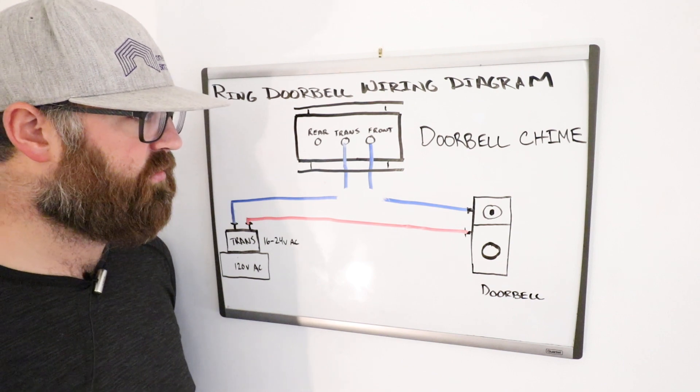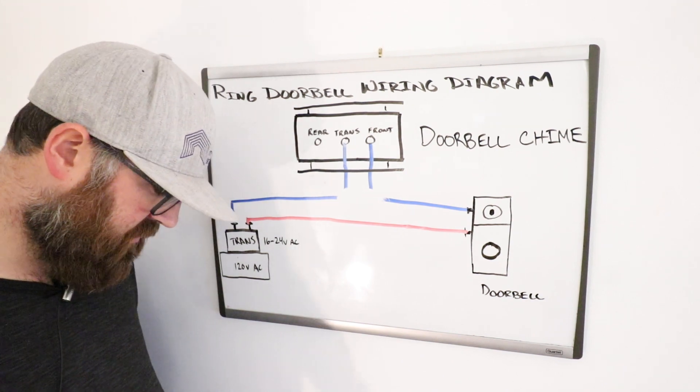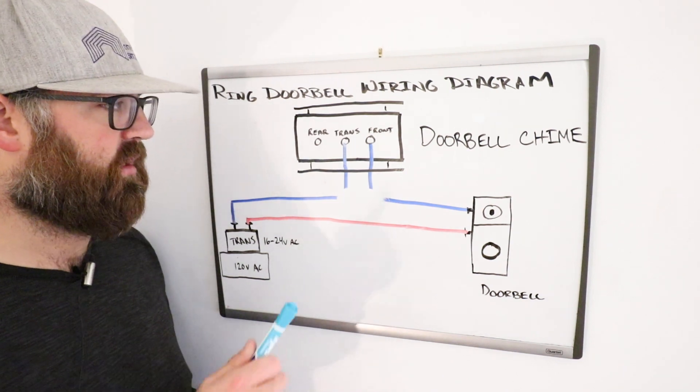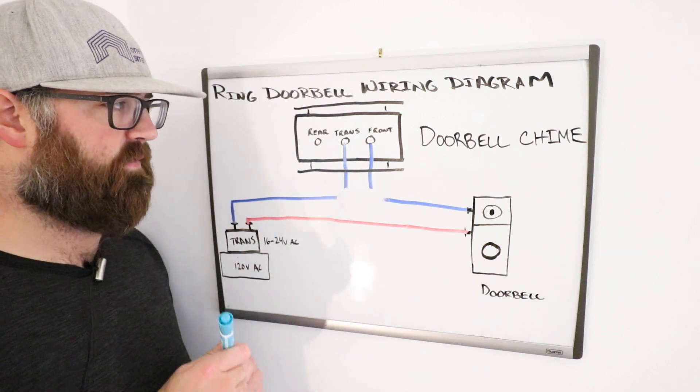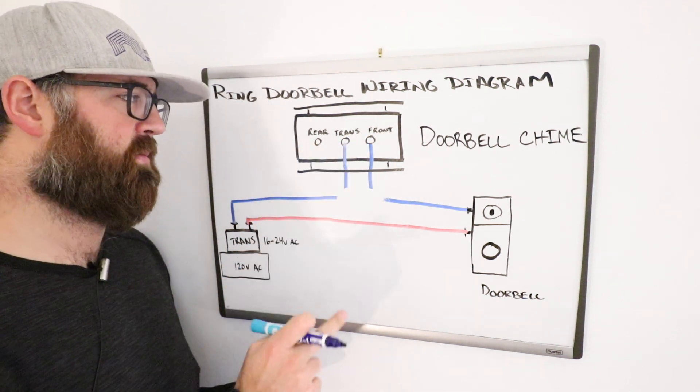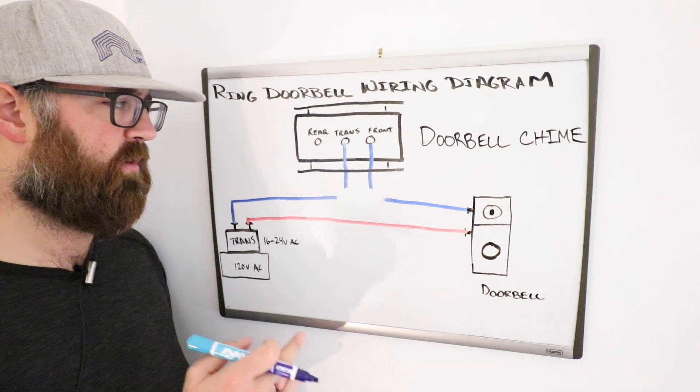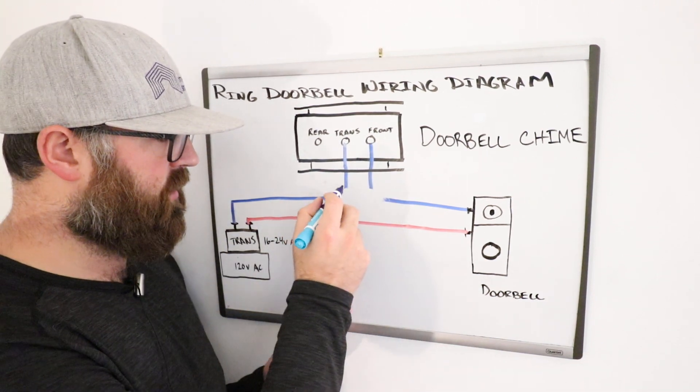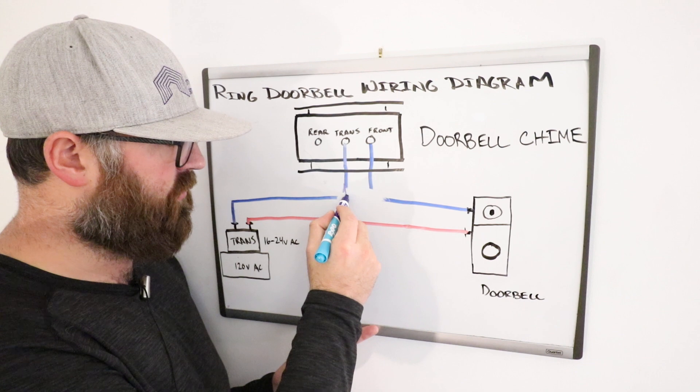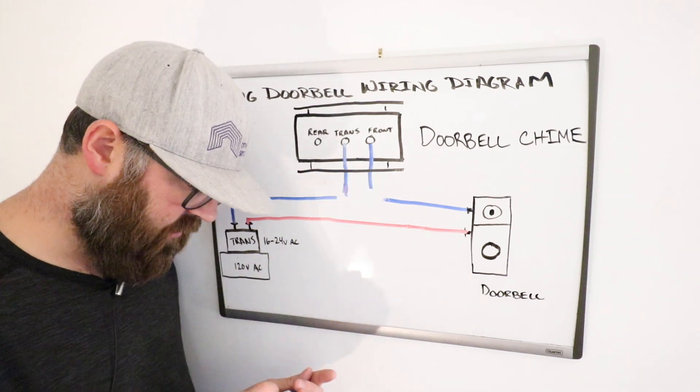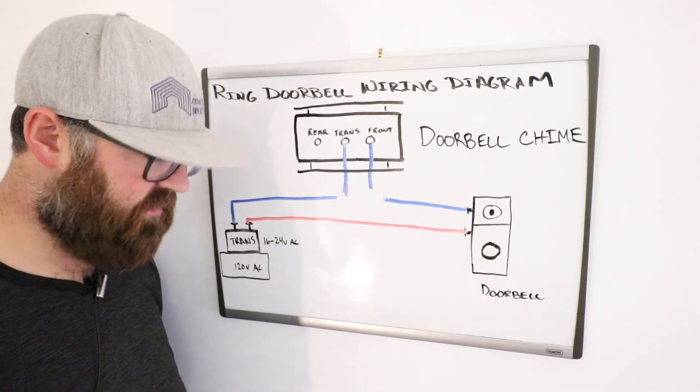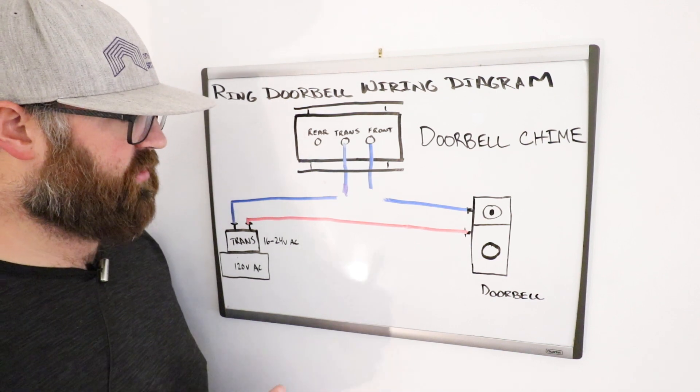So all you're going to do is you're going to insert it so that it is obviously connected to the transformer and front doorbell, the transformer terminal and the front doorbell terminal on the doorbell chime. And you're going to connect one wire to the transformer. We'll use pink.